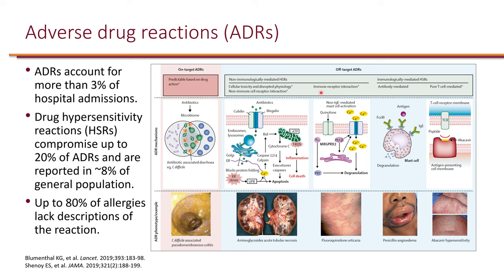An example is when fluoroquinolones interact with cell receptors on mast cells, resulting in urticaria. This is not activating the immune system, but the end result is mast cells causing urticaria. A non-immune cell-receptor-mediated example would be aminoglycosides causing nephrotoxicity, in particular acute tubular necrosis.